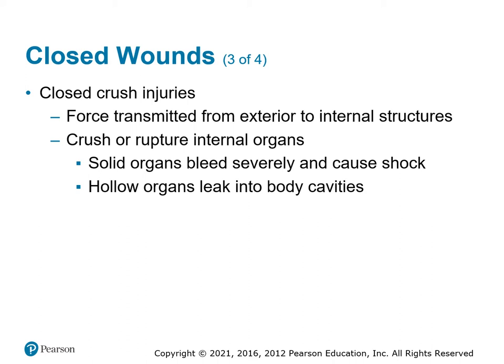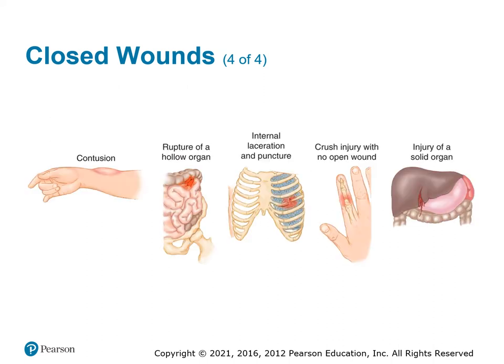This is an overview of what these injuries look like: a contusion with swelling, ruptured hollow organs leaking into internal cavities, a laceration of blood vessels from a broken bone, crush injuries causing more tissue damage, or a solid organ damaged and bleeding into the abdominal cavity.